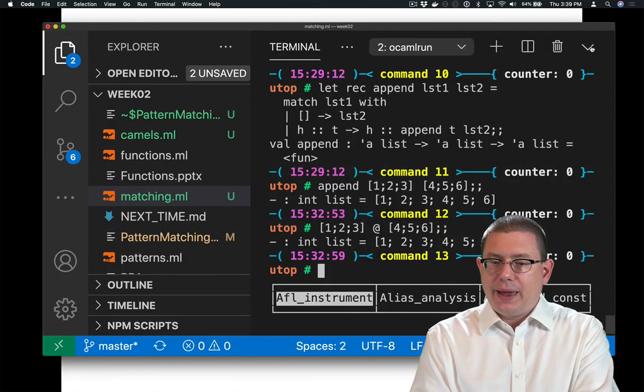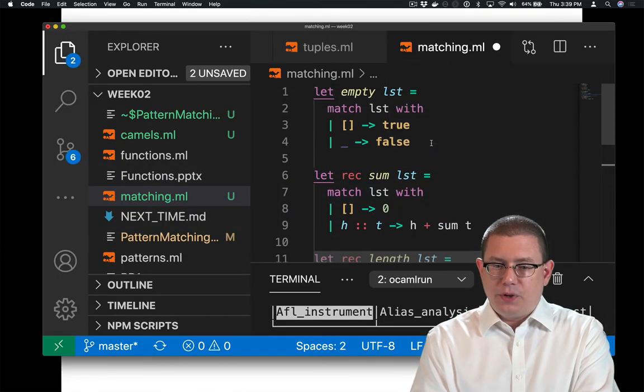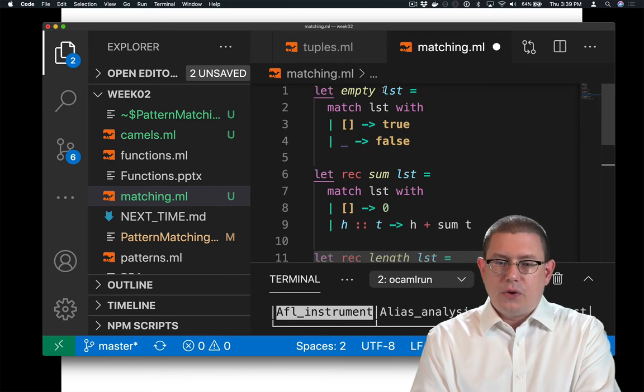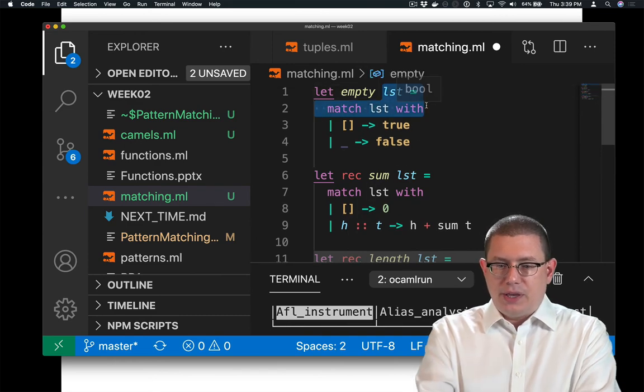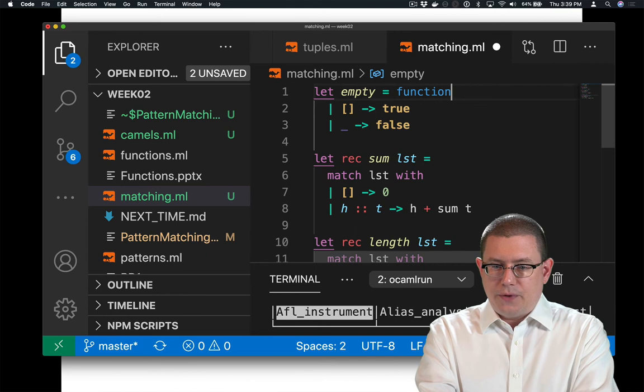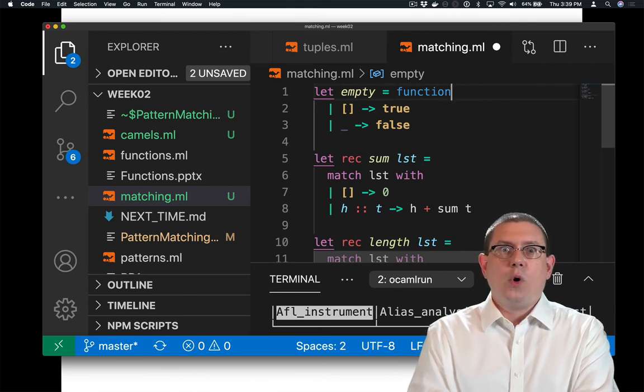I could go back and clean up the functions we've written so far this way. So for empty, I could replace that with equals function. Got rid of a whole line of code there.